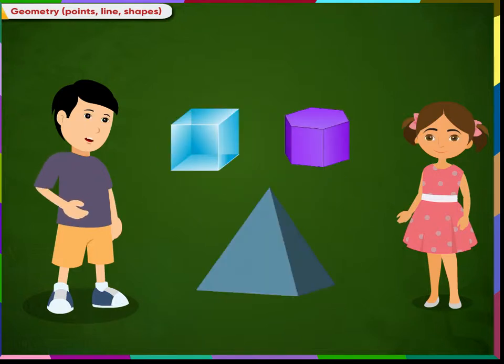For example, these shapes have flat surfaces. So, they are called as plane shapes.